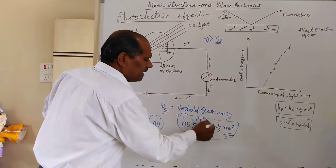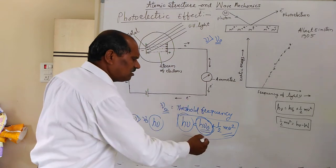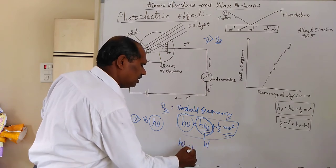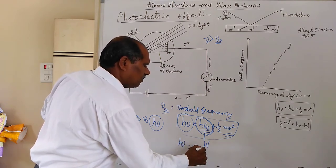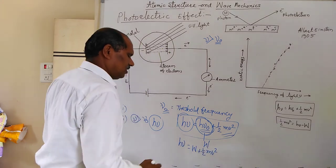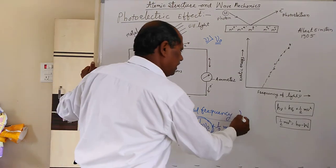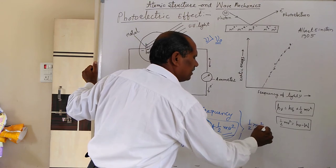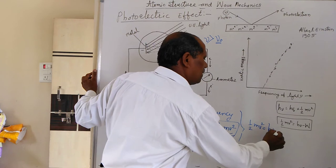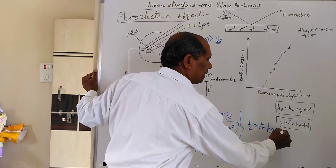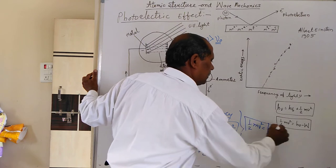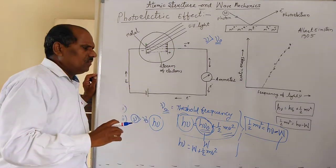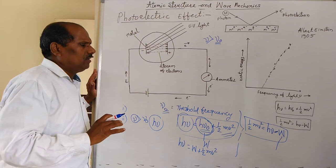H-nu-zero remains constant for a particular metal. If we replace this value with W, then we can rewrite the equation as: H-nu equals W plus one-half m-v-squared, which is the kinetic energy. Therefore, this equation may be rewritten as: one-half m-v-squared equals H-nu minus W. Here W is called the work function, and its value remains constant for a particular metal.